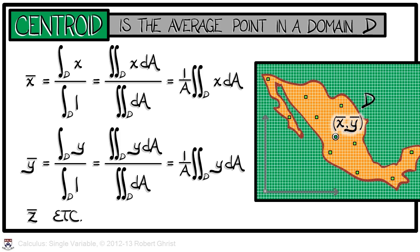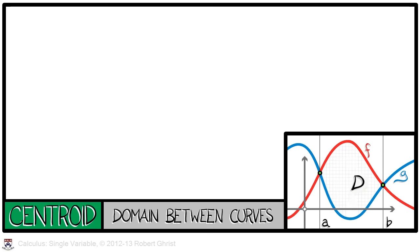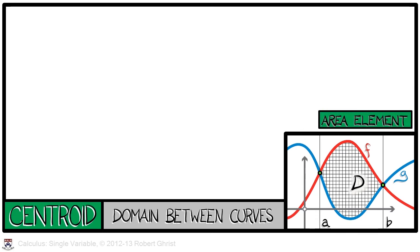So, one way to write these formulae for the centroid is as 1 over A times the integral over D of x dA or of y dA, respectively. Let's see how that works in the case where our domain is a region between two curves, G on the bottom and F on the top as x goes from A to B. Then, in this case, the area element is going to be an infinitesimal rectangle of dimensions dx and dy. Now, if we look at the formula for x bar, that is the double integral of x with respect to area over the area, then what do we get?